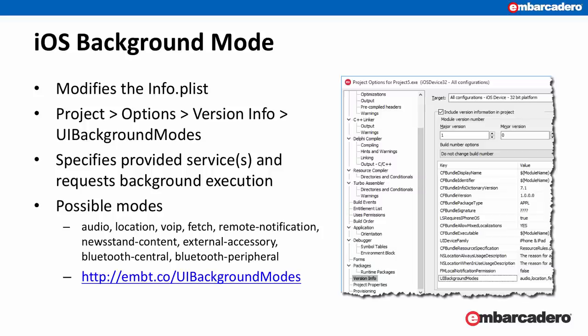For iOS background execution mode, what it does is you modify the info.plist file. This is the file that describes to the iOS operating system how your app behaves. You do this by going to Project > Options > Version Information > UI Background Modes, and you specify the background modes that your application supports. According to Apple's documentation, you have to implement these services — for example, background audio — and then you specify that background mode. For a description of each of those modes, you can check out the short URL at the bottom.